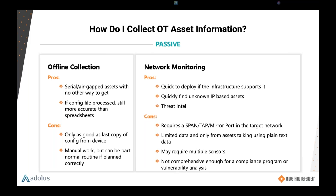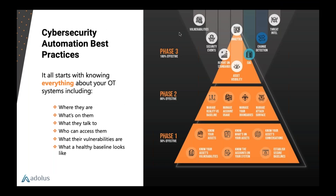Slides and the recording will be available after the presentation. Now for the poll results: not surprisingly, 51% use manual collection, 17% active, 6% agentless, and 17% passive as their primary asset collection method. That's not surprising — I'm not surprised to see over 60% still using manual methods.